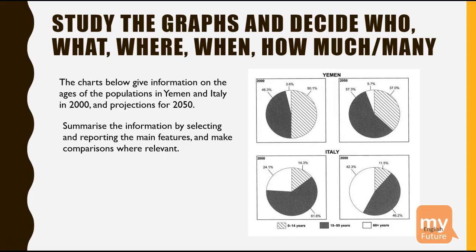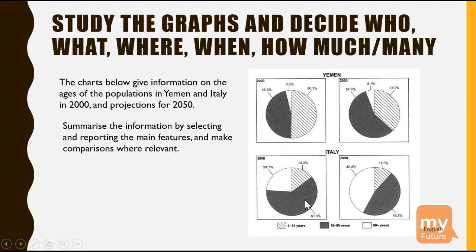The charts give information on the ages of the populations in Yemen and Italy in 2000 and projections for 2050. And of course this part, as you probably know, is the same in every test. What is your task? You have to summarise the information, select the main features, report the main features and then make comparisons where it is relevant. Don't try to compare everything and don't try to report every figure.